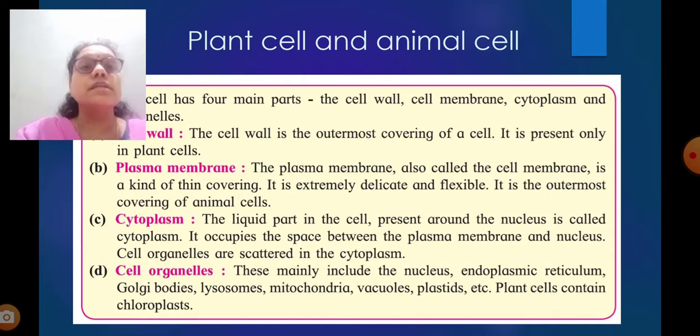Cell organelles: These mainly include the nucleus, endoplasmic reticulum, Golgi bodies, lysosomes, mitochondria, vacuoles, plastids, etc. Plant cells contain chloroplast.